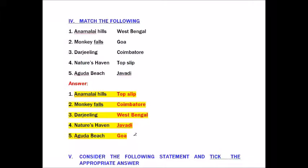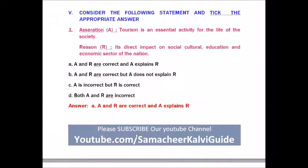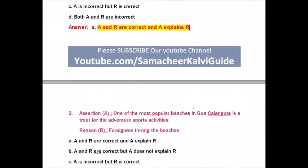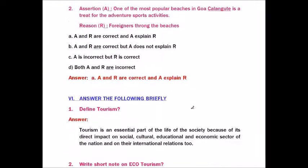Roman number five: Consider the following statement. Assertion: Tourism is an essential activity for the life of the society. Reason: Its direct impact on social, cultural, educational and economic sector of the nation. Options A through D given. The answer is: A and R are correct and A explains R.